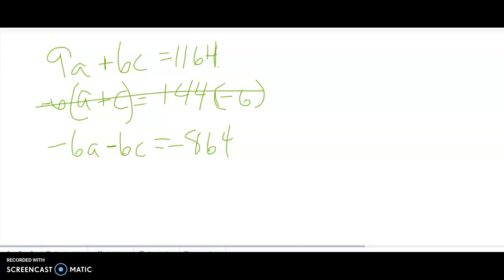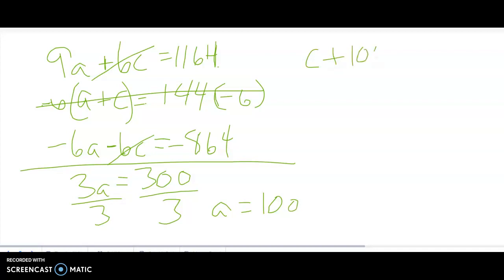If we combine these by addition, the 6c cancels and it leaves you with 3a equals 300. Divide by 3, a equals 100. Once again, 100 plus c equals 144. Subtract 100 from both sides, c equals 44.